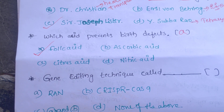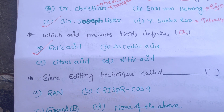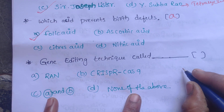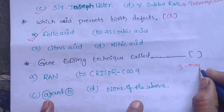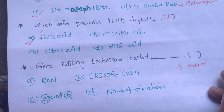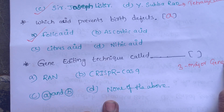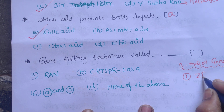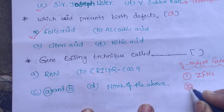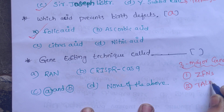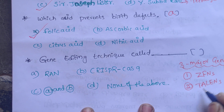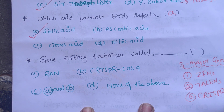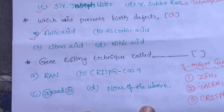The next question is about gene editing techniques. There are mainly three major types of gene editing techniques. The third one is the CRISPR-Cas9 gene editing technique.